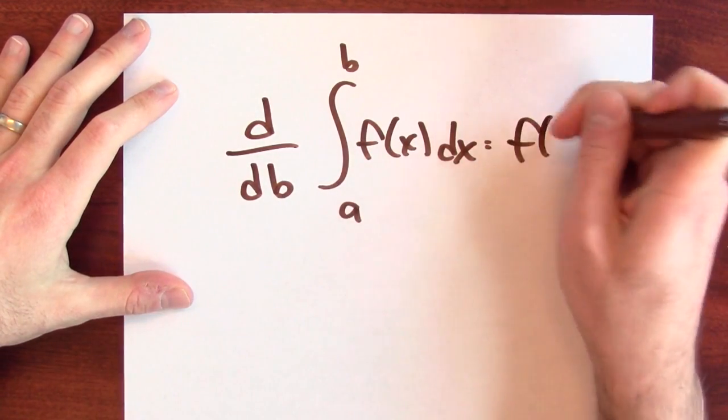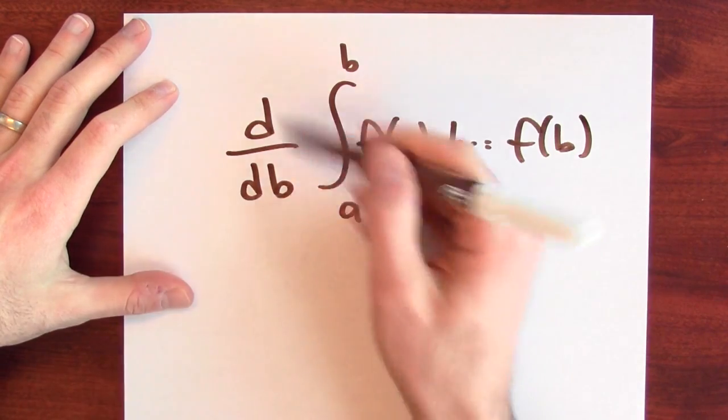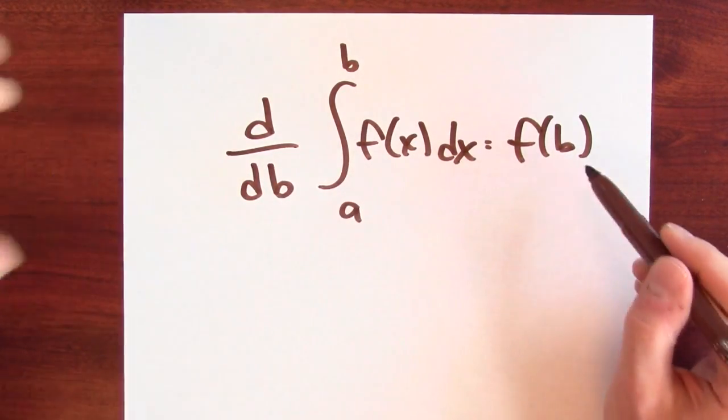Well, it's just f of b, right? The rate of change of the accumulation function is the function's value. But what would happen if I were to